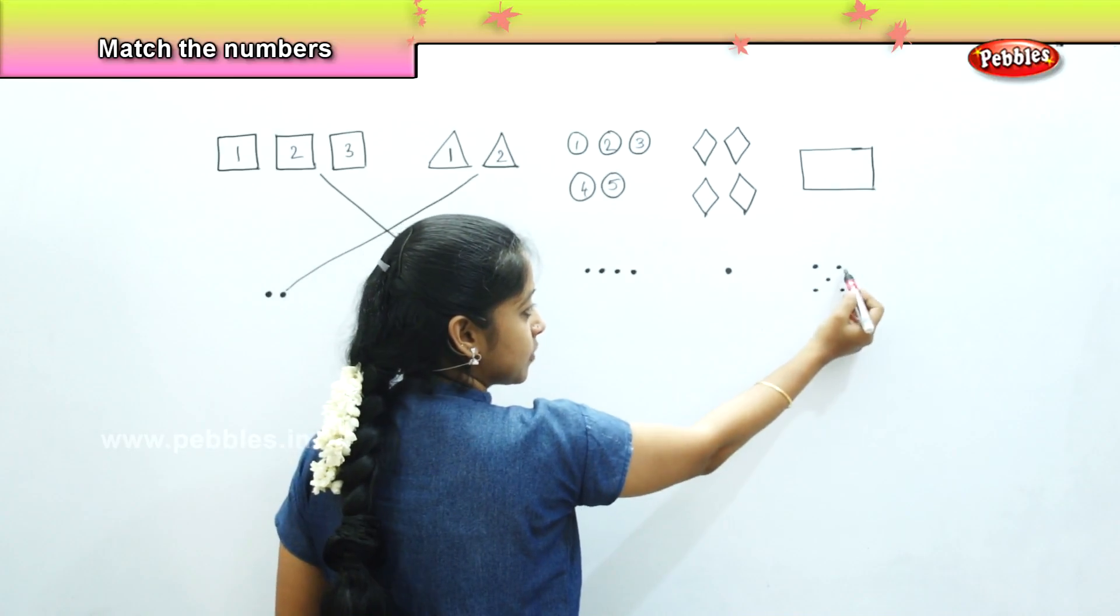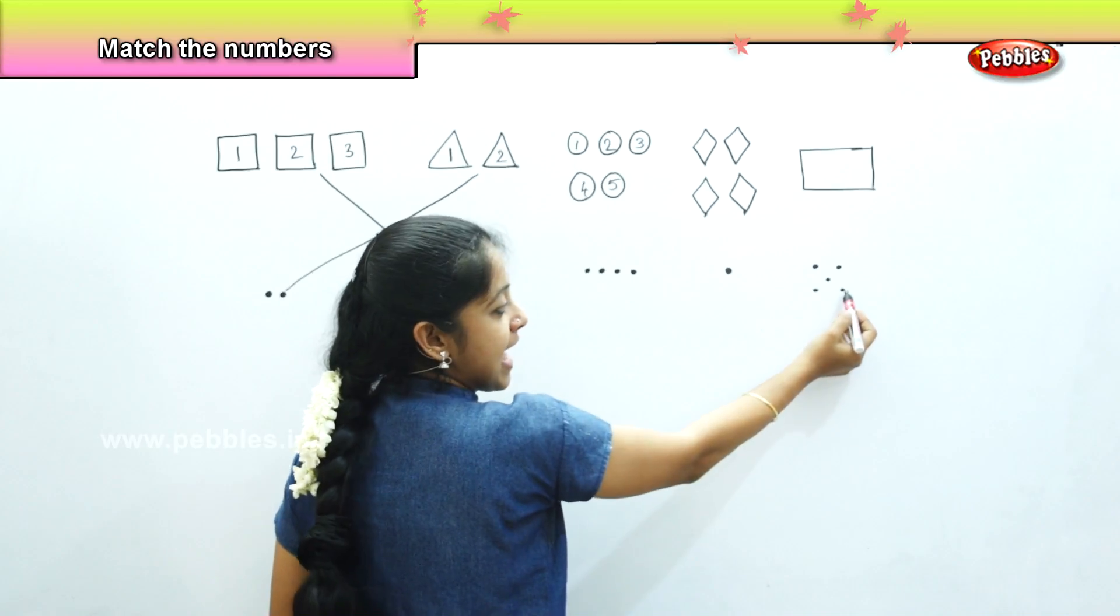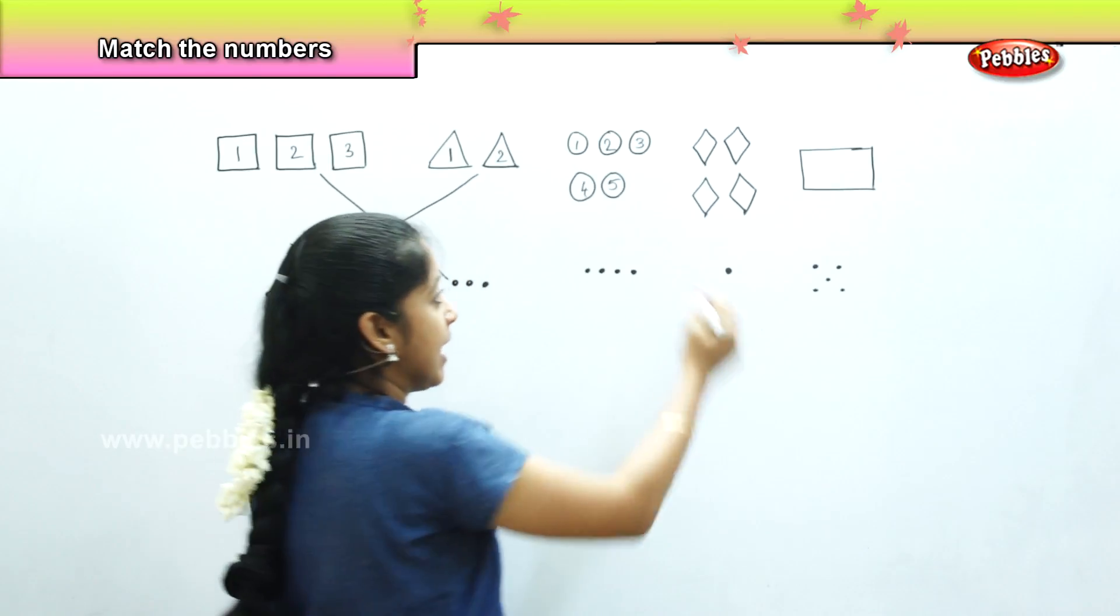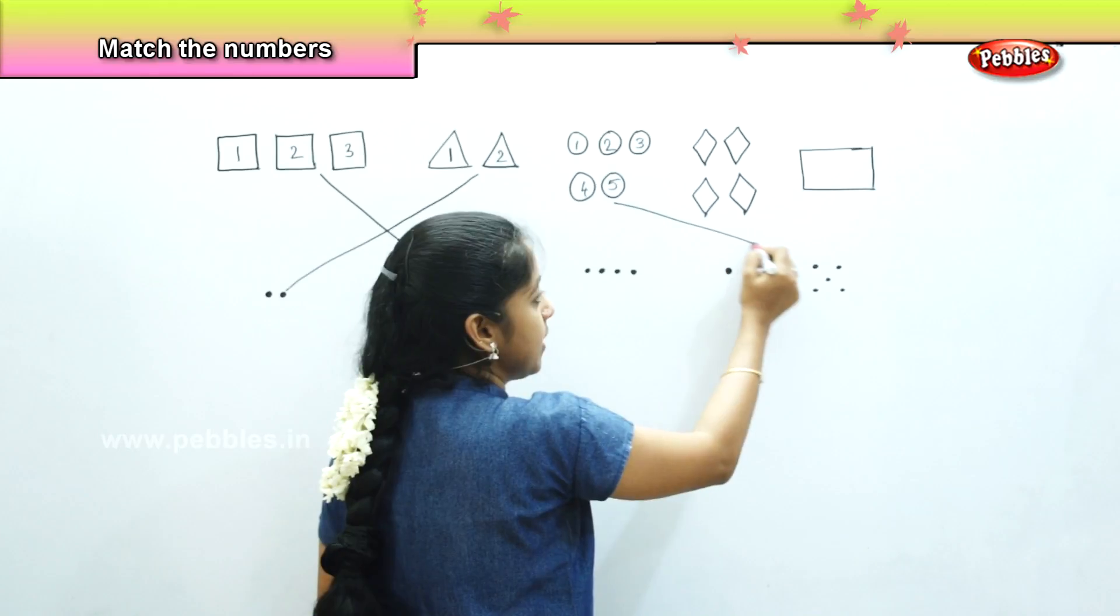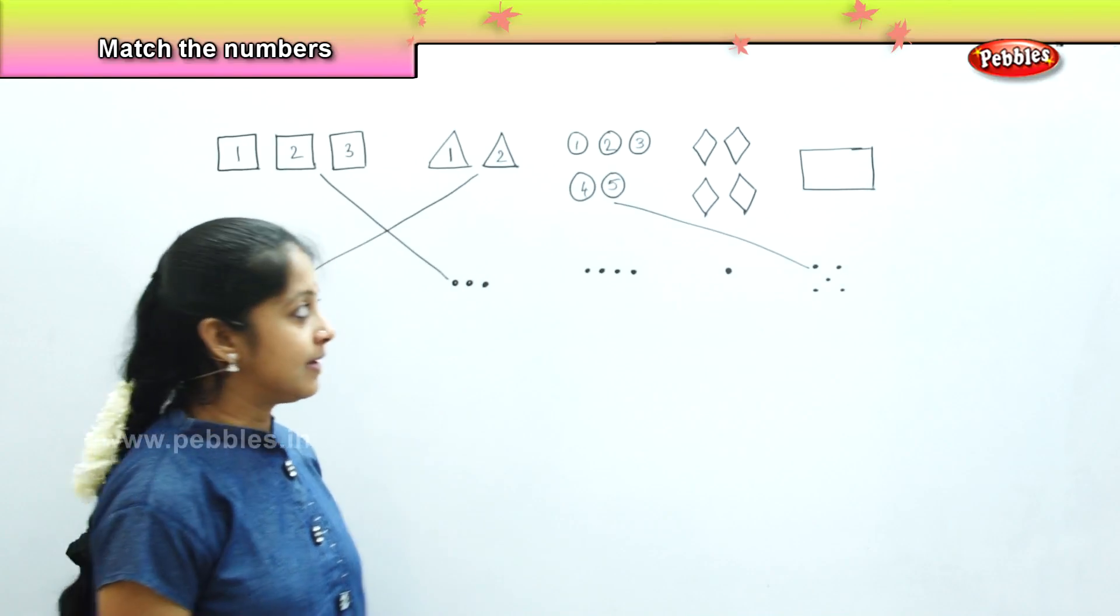It's 1, 2, 3, 4 and 5. We can match these circles with these dots. Is it easy? Yes.